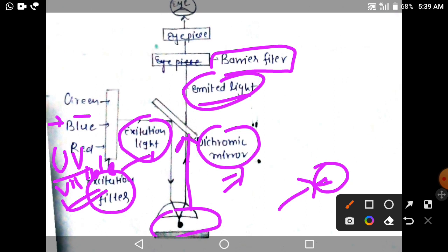The emitted light passes through the barrier filter. There are chances that some light from the specimen passes through unchanged. The barrier filter functions to only pass out longer wavelength containing light through the eyepiece.